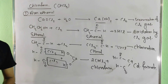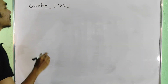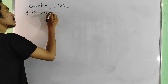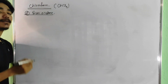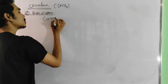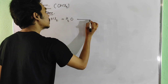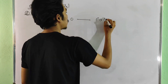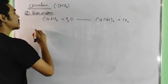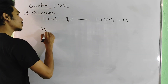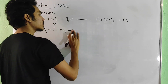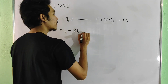Now we can prepare chloroform by method number two — from acetone. We use acetone in water with Ca(OH)2 plus Cl2 chlorine gas. With acetone, since we don't have alcohol, we go through oxidation and then chlorination steps.